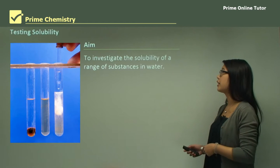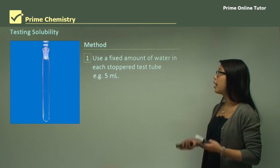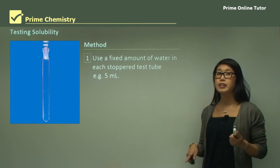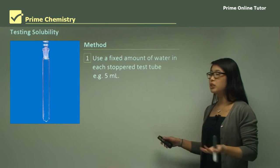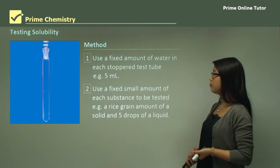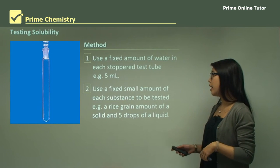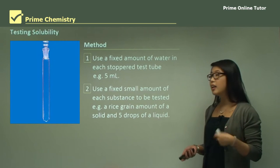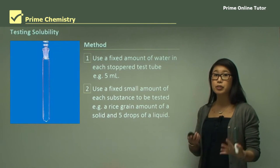The aim today is to investigate the solubility of a range of substances in water. How we're going to do this is we'll have a fixed amount of water in a stoppered test tube, so we'll just say 5 mL, and then we can get a fixed amount of the substance we're looking at, a grain of rice size, and dissolve it in the 5 mL of water.